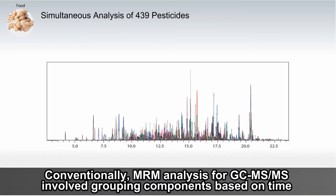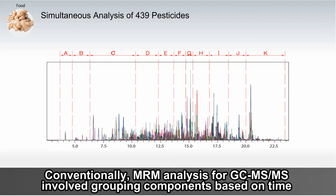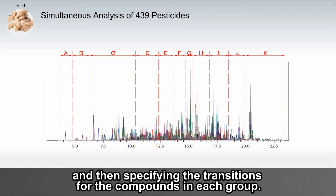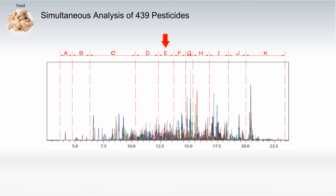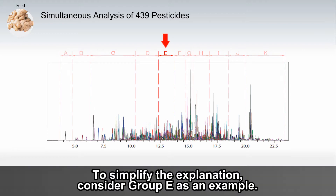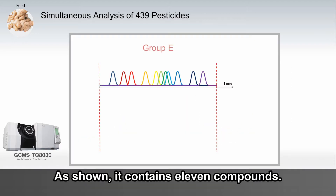Conventionally, MRM analysis for GCMS-MS involved grouping components based on time and then specifying the transitions for the compounds in each group. To simplify the explanation, consider Group E as an example. As shown, it contains 11 compounds.